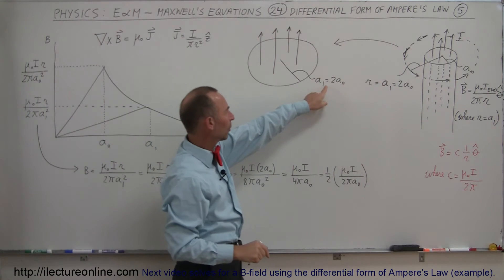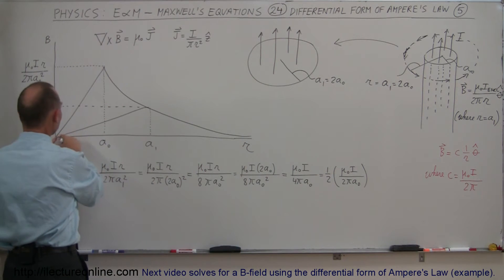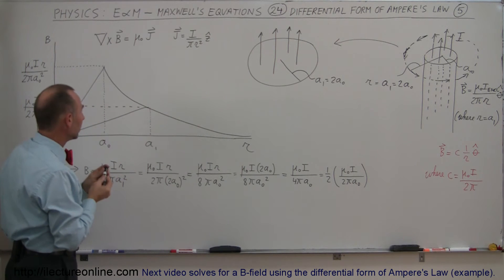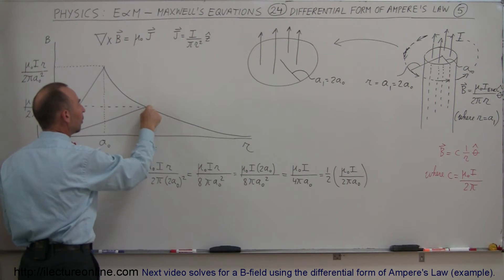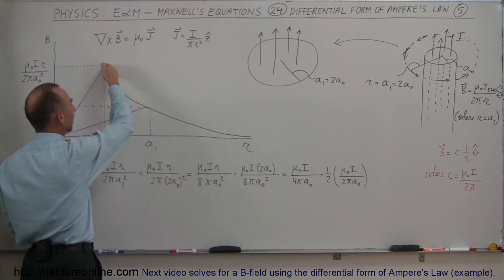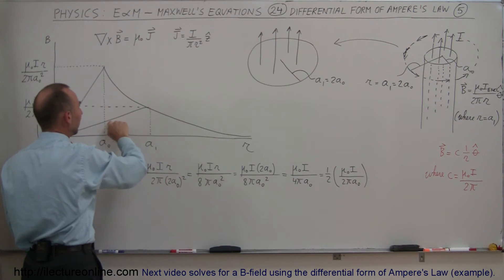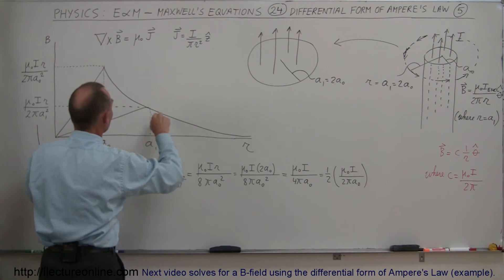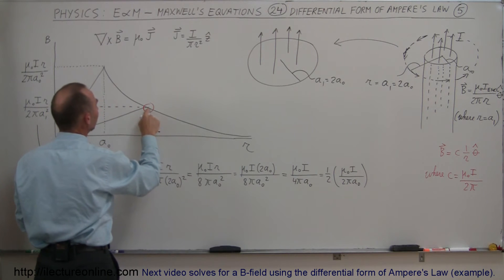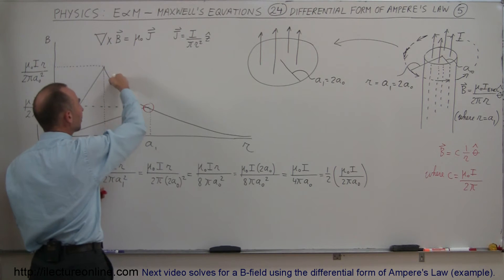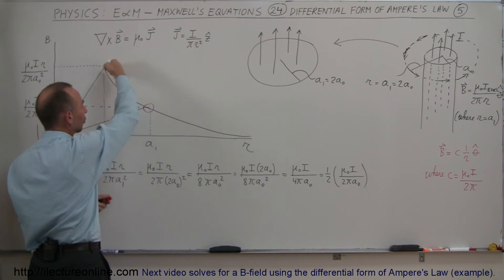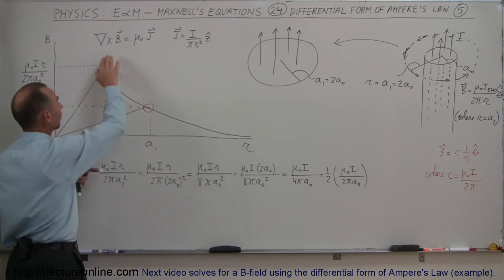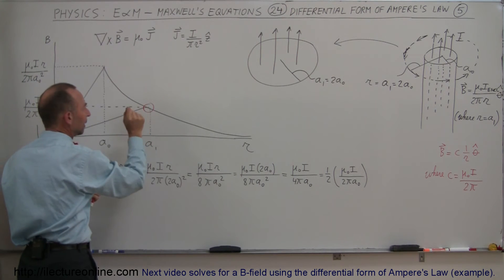This allows you to use the differential form of Ampere's law within a region of twice the original radius, all the way out to A1, which is twice A-naught. At that boundary point, the two curves intersect, and the B field obtained from the integral form of Ampere's law equals the B field obtained from the differential form — they are equal to each other at that point.